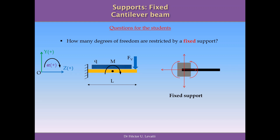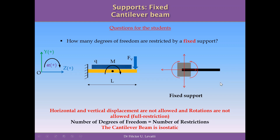For the cantilever beam, a fixed support is applied at one extreme. The fixed support is the most powerful support in this simple analysis because it restricts horizontal displacement, vertical displacement, and rotation at the point where it is applied. The number of degrees of freedom, three, equals the number of restrictions, three, introduced by the fixed support. Therefore, the cantilever beam is also an isostatic beam.